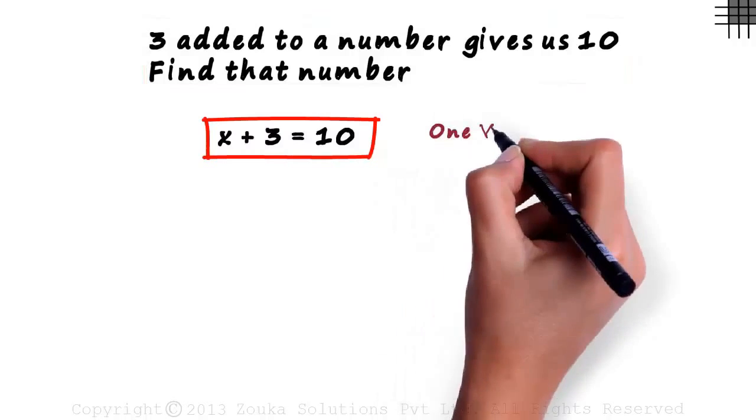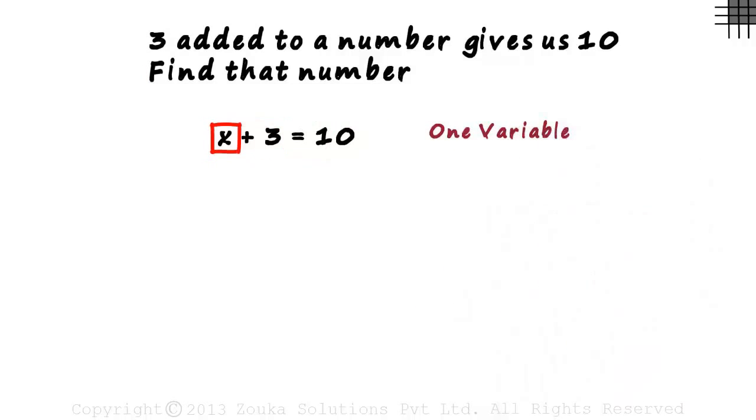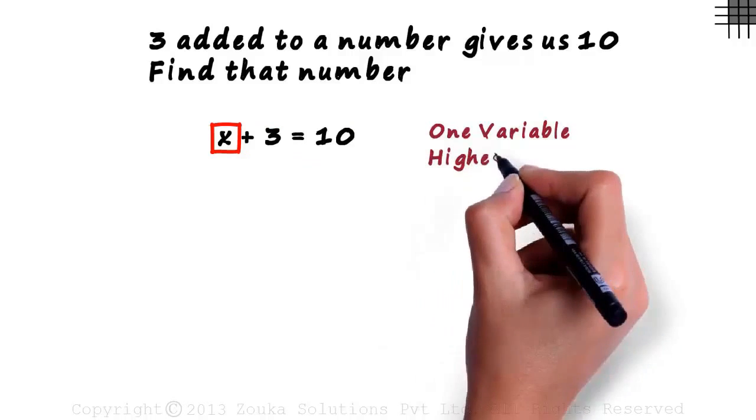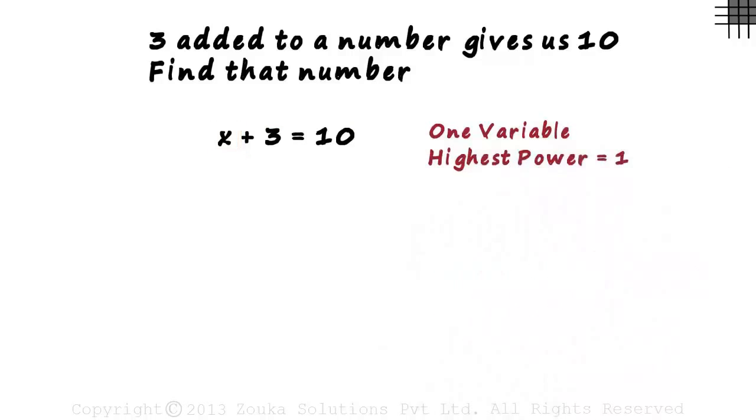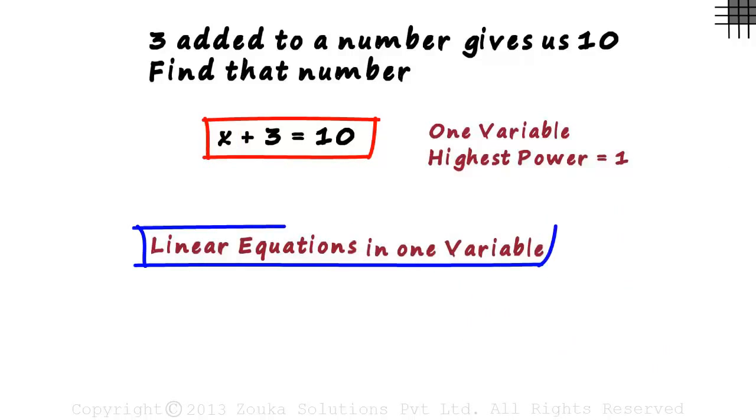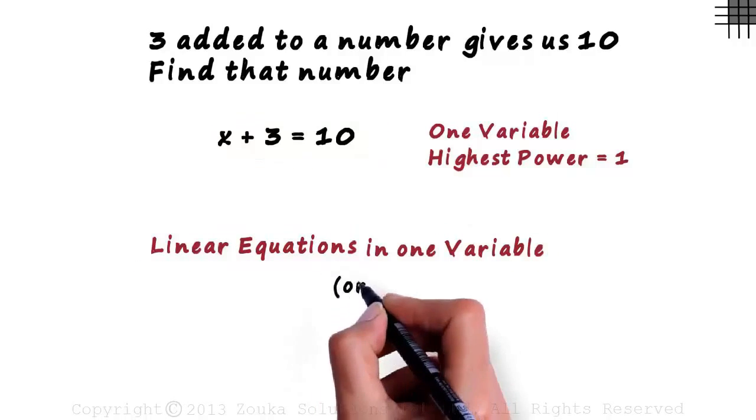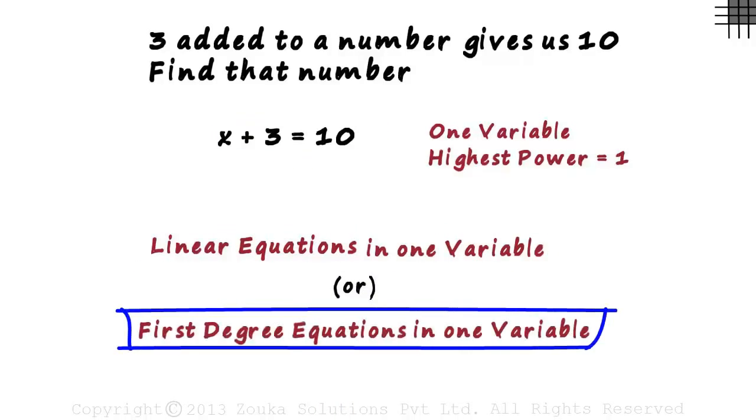This equation has just one variable, which is x, and it's an unknown. The highest power of x is 1. These kinds of equations are called linear equations in one variable. They are also referred to as first degree equations in one variable.